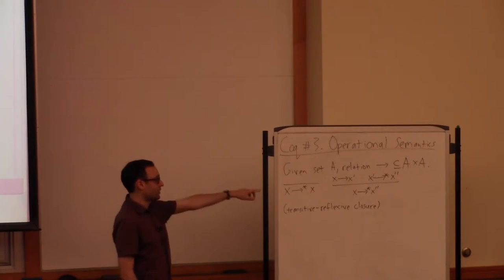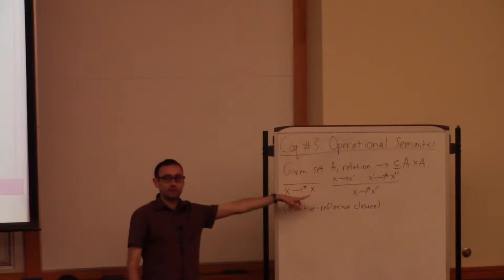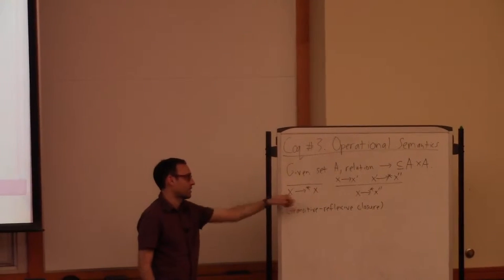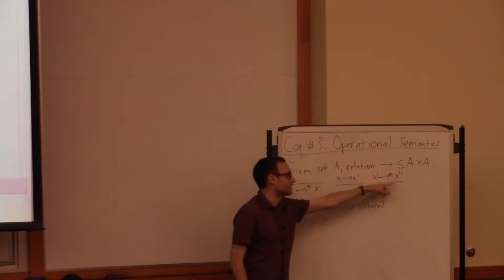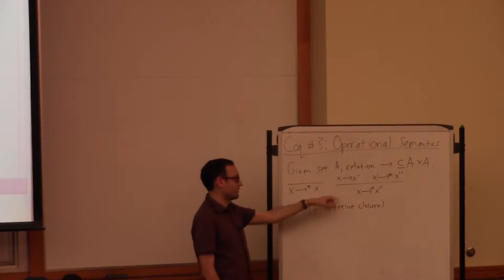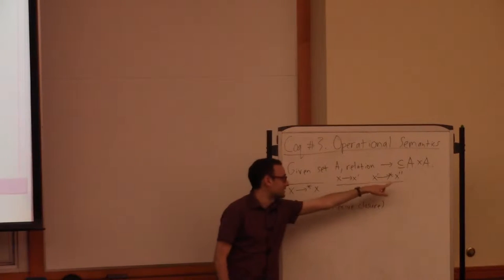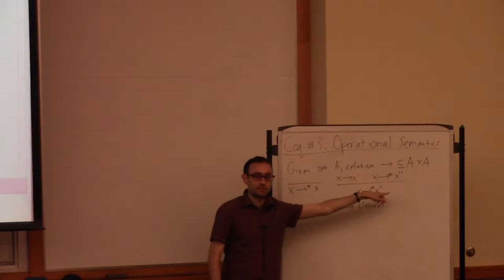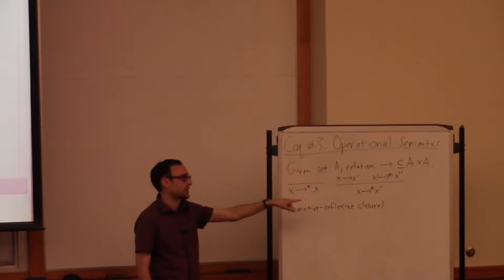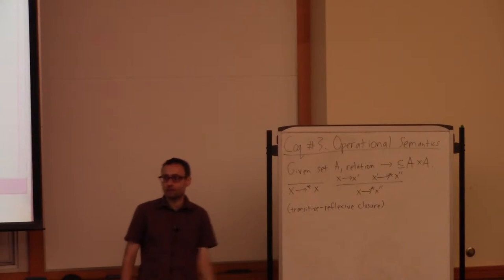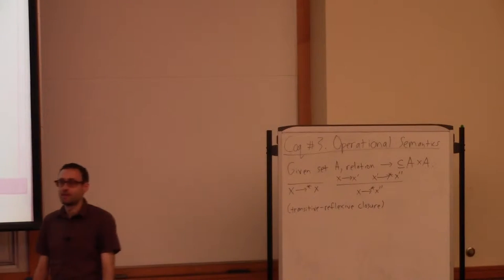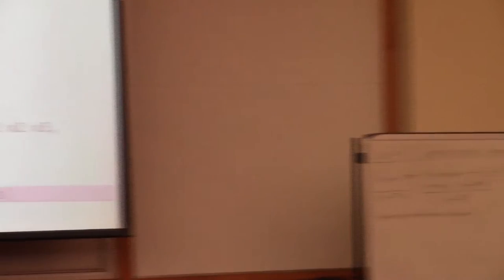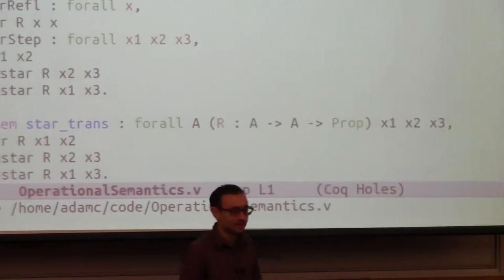First, it's a reflexive relation, so any element is related to itself by the closure of this arrow. And also, if we can take one step in the original relation, and then from there take zero or more steps to some final state, then we can compose together these two kinds of steps and get one big step here. So transitive reflexive closure stands for taking zero or more steps of some underlying relation. We'll apply this to notions of taking a step in the execution of a program, and it also has many other applications in math and computer science.